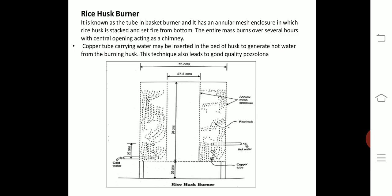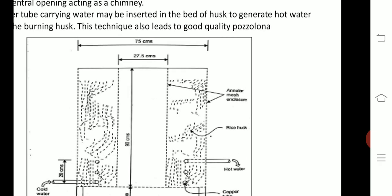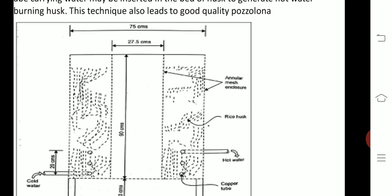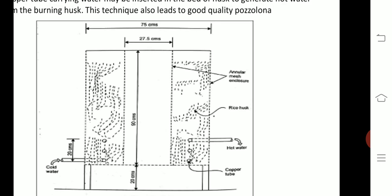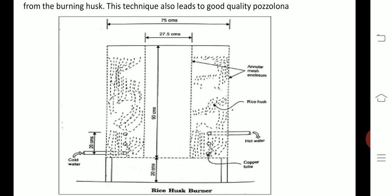The second method is a typical rice husk burner, also known as the tube-in-basket burner. It has an annular mesh enclosure in which rice husk is stacked and set fire from the bottom. The entire mass burns over several hours with the central opening acting as a chimney. You can see the annular mesh enclosure with rice husk placed in between, a provision for hot air on the right side, and a copper tube to pass the hot air. Cold water is inserted from the left side between the annular mesh, with spacing of about 27.5 centimeters. The copper tube carrying water may be inserted in the bed of husk to generate hot water from the burning husk. This technique also leads to good quality pozzolano.